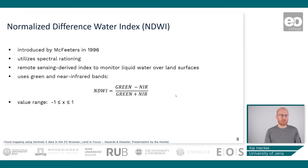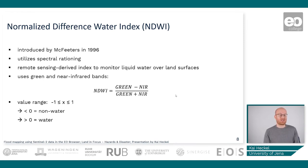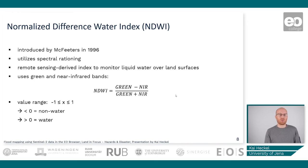The value range for this index goes from minus one to one. Everything smaller than zero is classified as non-water, and everything above zero is classified as water. However, keep in mind that these values may vary between different types of water depending on their turbidity states or the amount of vegetation in them, so you should always adjust your thresholds accordingly when delineating water.